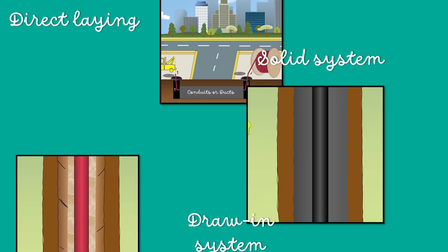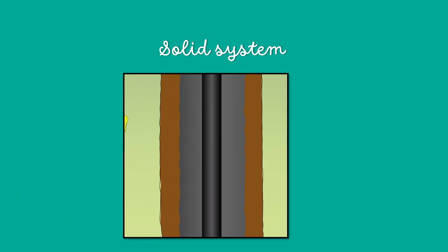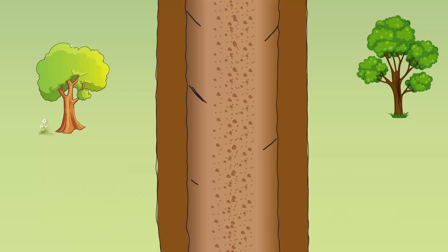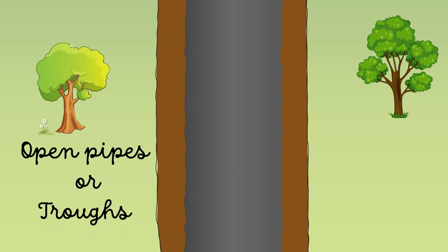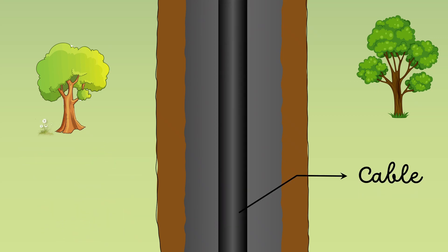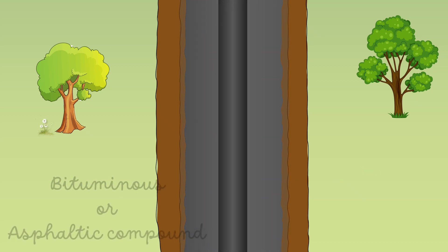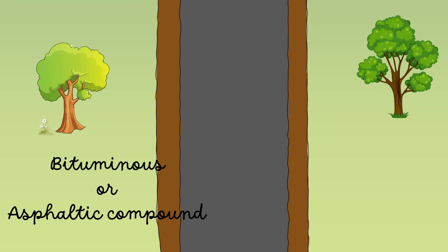Now let's get to a solid system. In this method of laying, the cable is laid in open pipes or troughs dug out in the earth along the cable route. After the cable is laid in position, the troughing is filled with a bituminous or asphaltic compound and covered over.